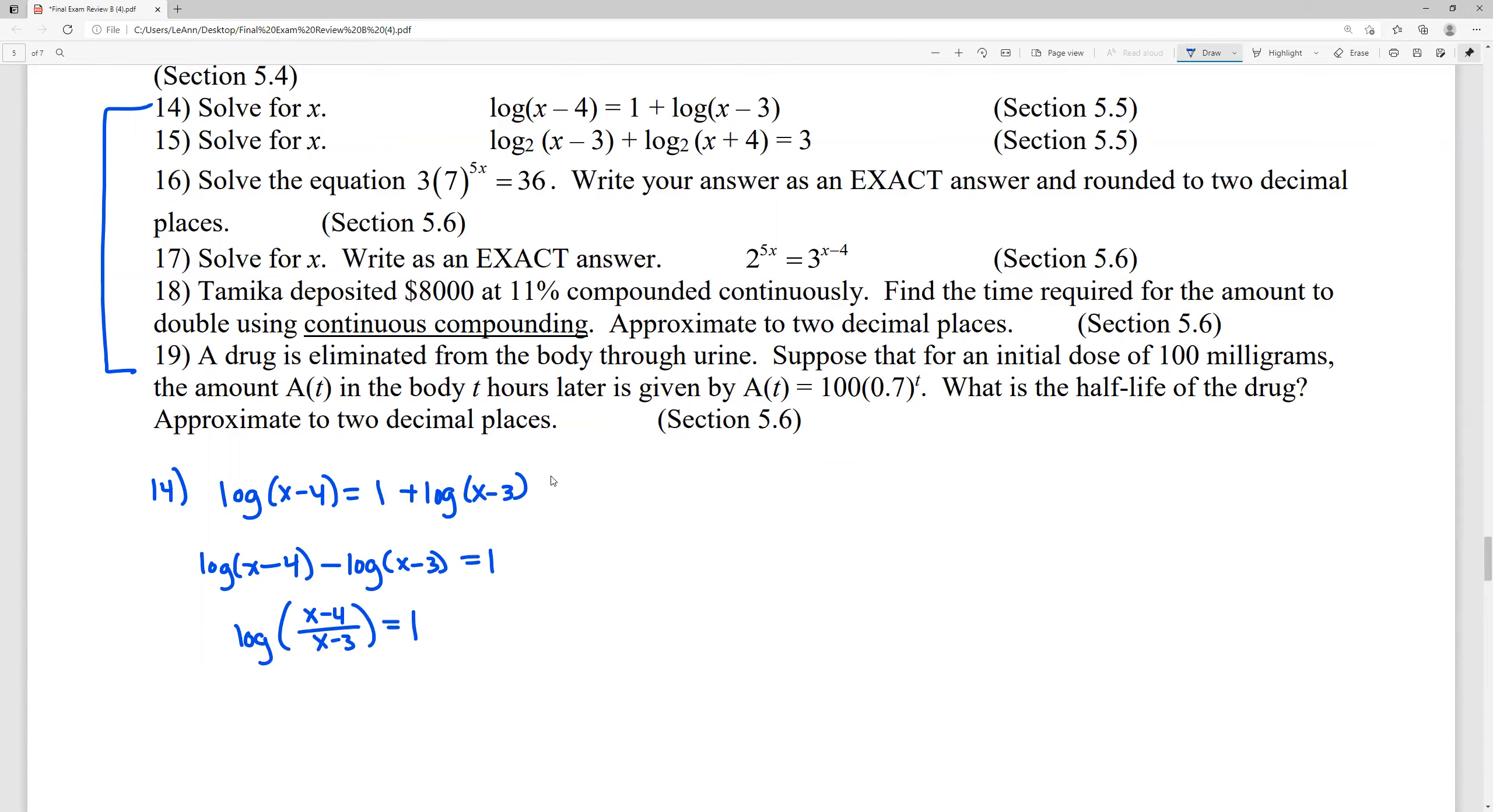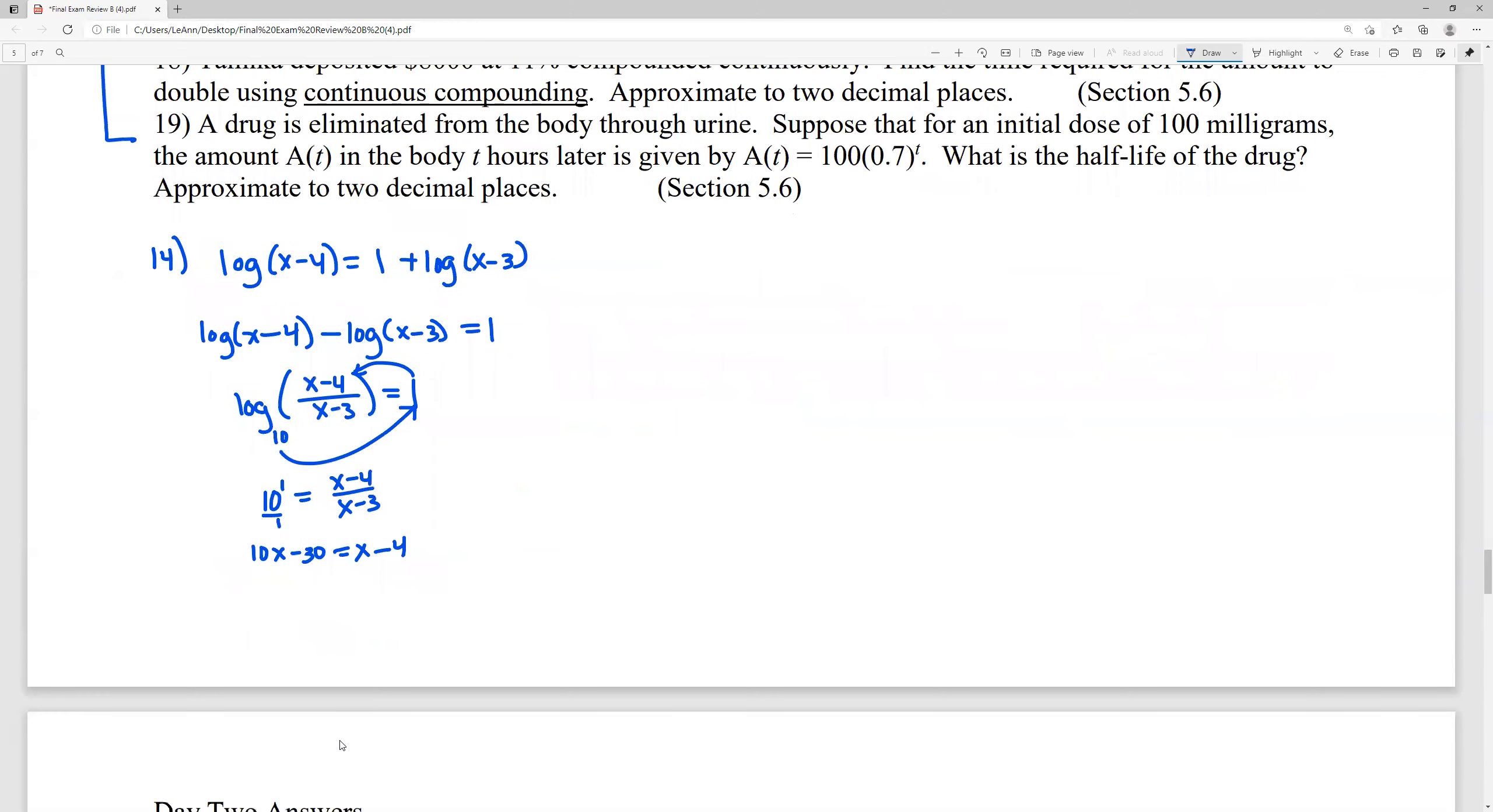And that equals 1. So because this does not have logs on both sides, once we condensed everything down, we have to do the conversion to get it to be into something solvable. So 10 to the 1 equals this argument, which is (x - 4) / (x - 3). 10 to the 1 is 10. We're going to cross multiply here. So that's 10x - 30 = x - 4. Solve that for x. That's going to be 9x when we subtract this x over, add 30 over equals 26. It looks like the answer should be 26/9, which is a non-reducible fraction.